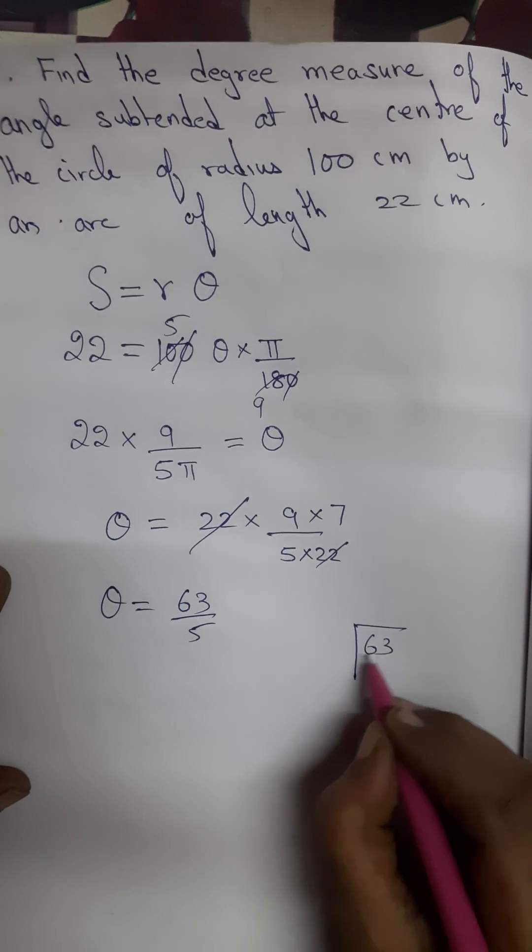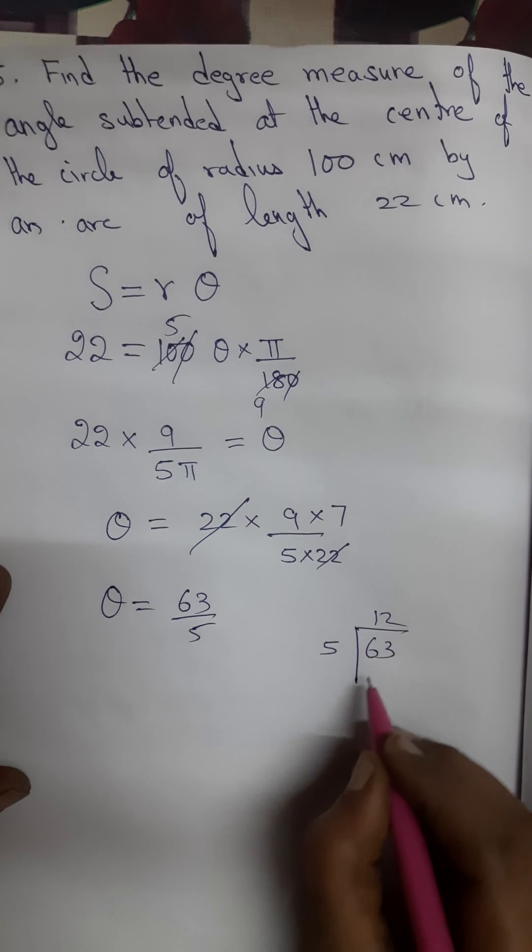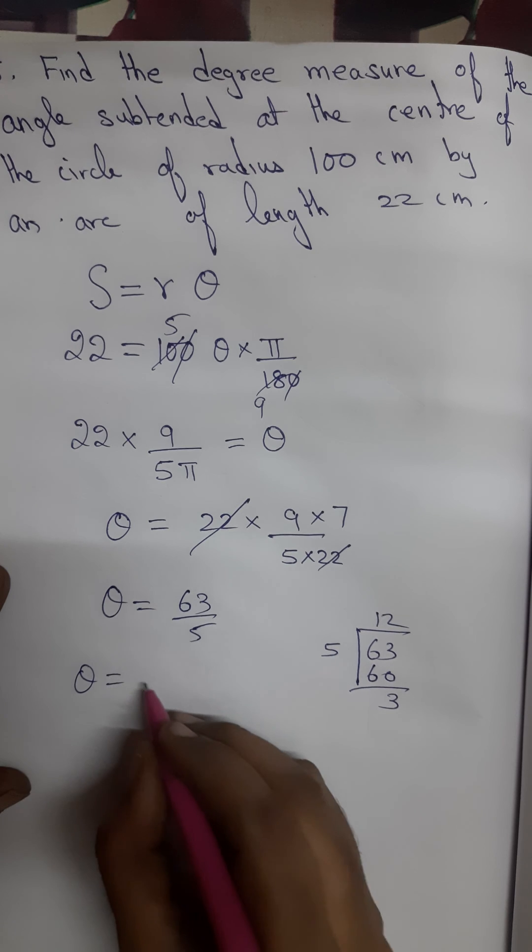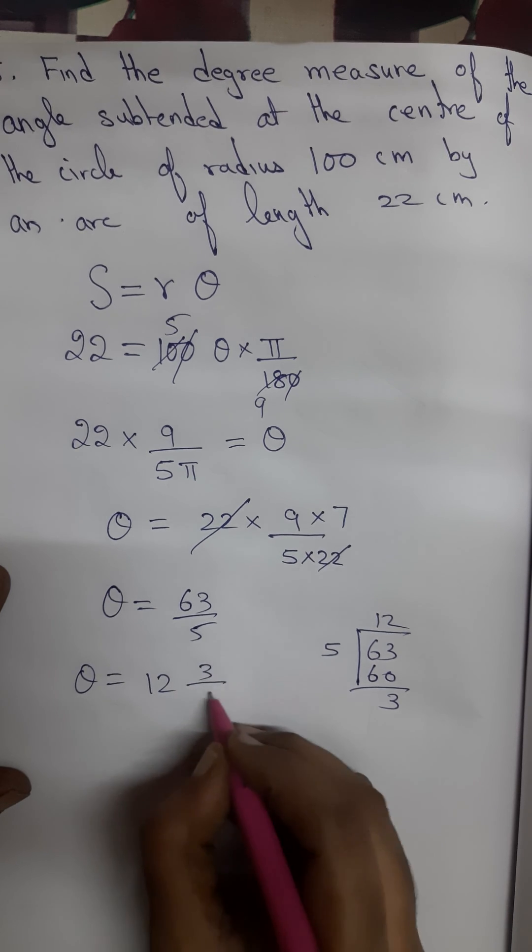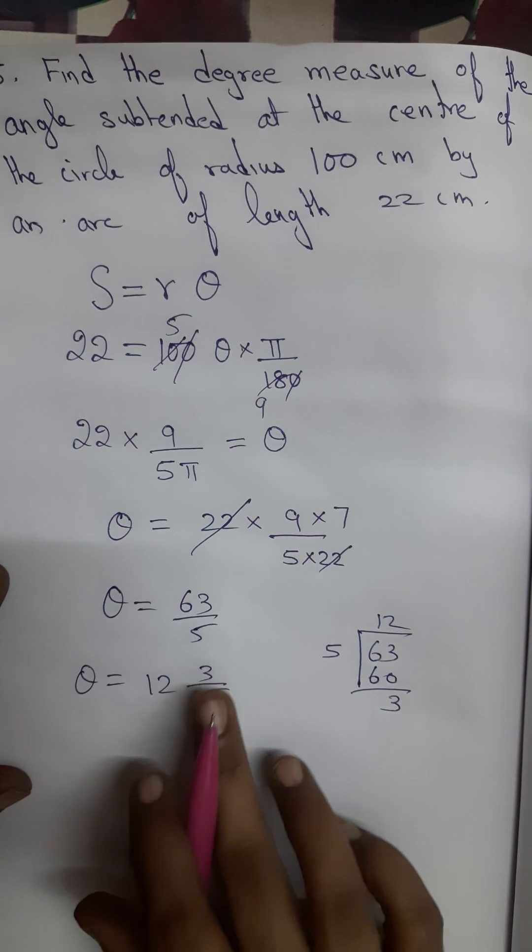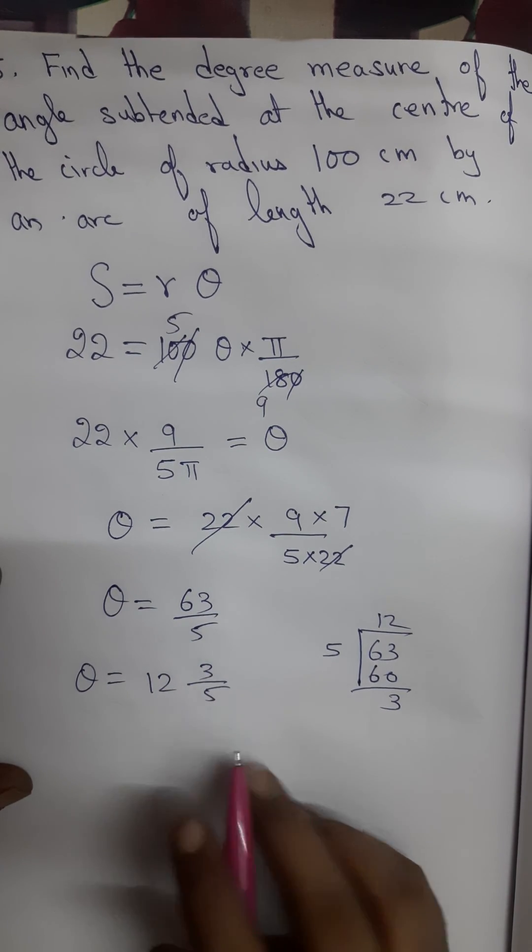Let me put 63 inside, 5 out. 5 12 is 60, remainder 3. I can write it as a mixed fraction, 12, 3 by 5. You have learnt in the lower classes, if any improper fraction is there, I can convert into mixed fractions.